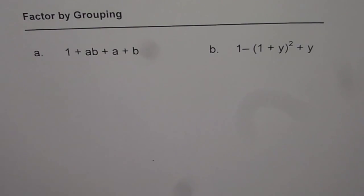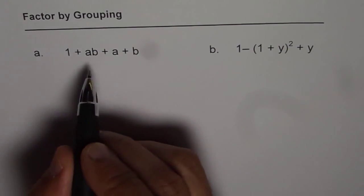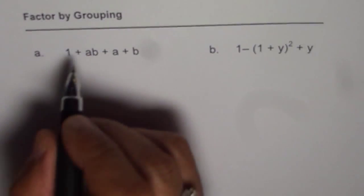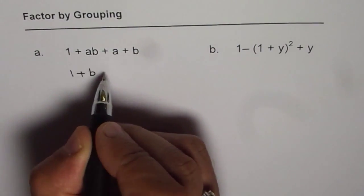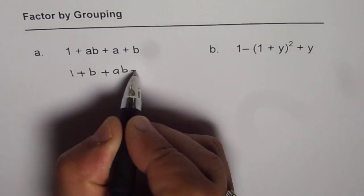So what we can do here is we can rearrange them a bit. So I will write 1 + b and then we have ab + a.